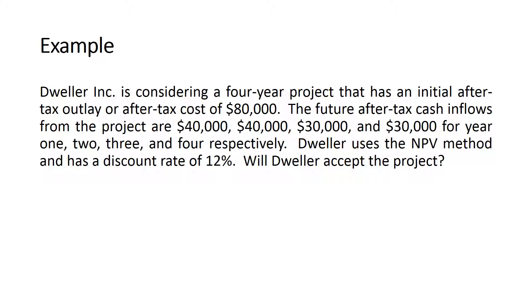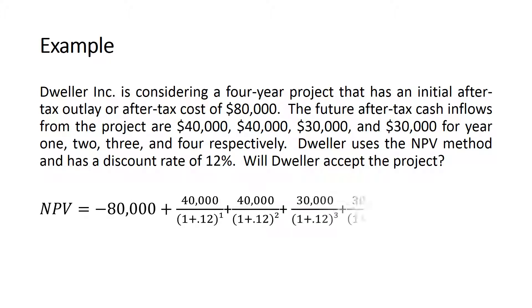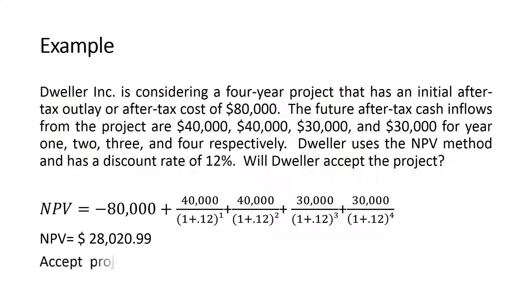This is a straightforward example. Using the net present value equation, we start by putting the cash outflow as a negative number and then add the cash inflows for all years discounted to today's value. The net present value is $28,020.99. Since the number is positive, we will accept the project.